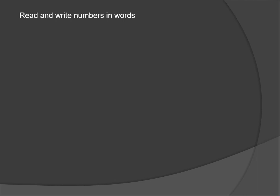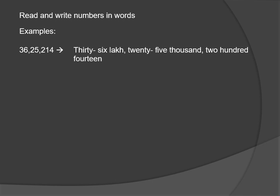Now look at the first example. Observe the periods from the right side — commas separate the periods. This number has ones period, thousands period, and lakhs period. Reading from the left: there is 36 in the lakhs period, so 36 lakh. In the thousands period there is 25, so 25,000. In the ones period there is 214, so 214.